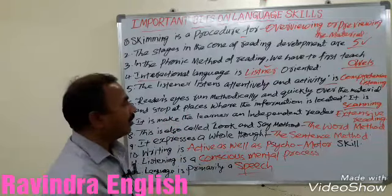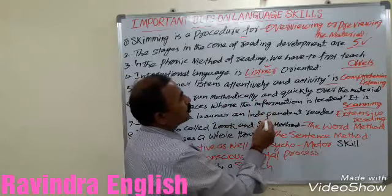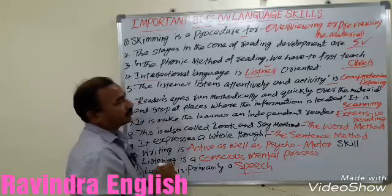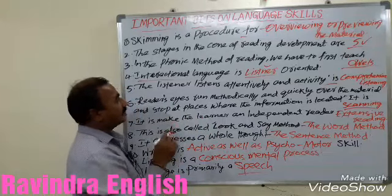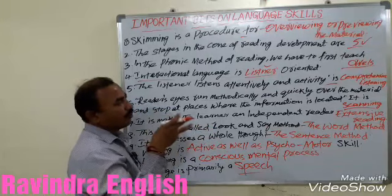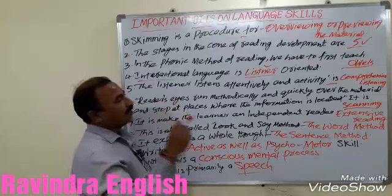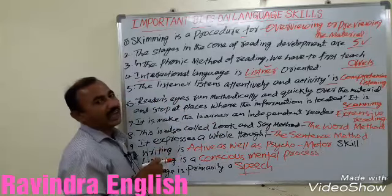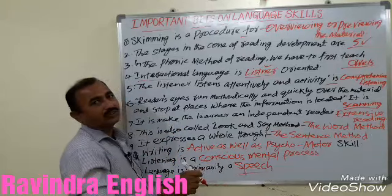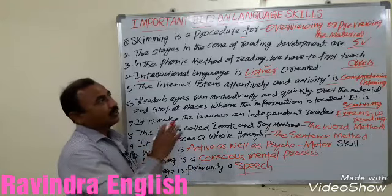Comprehensive reading is reading with understanding. The reader's eyes run methodically and quickly over the material, and stop at places where the information is located. That is scanning. Reader's eyes run methodically, quickly over the material, and stop at the place where the information is located — it is scanning. Skimming is different from scanning theory.